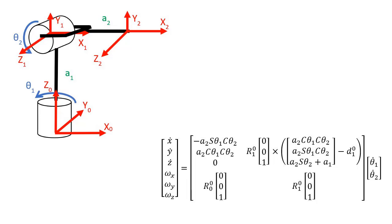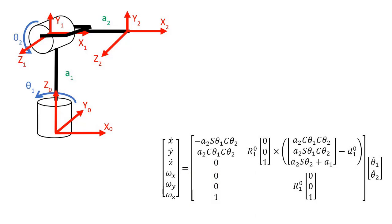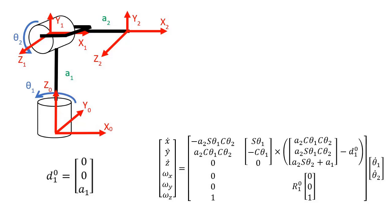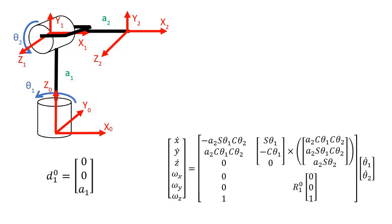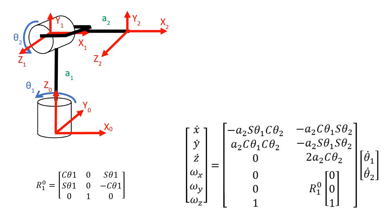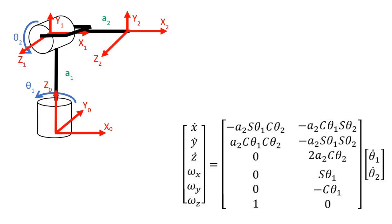For the second column, R01 is found and its third column is extracted. D01 is also identified, the subtraction is done, and the cross product of the two vectors is computed and filled into the Jacobian matrix. For the bottom part, R01's third column is filled in. The Jacobian matrix is now complete.